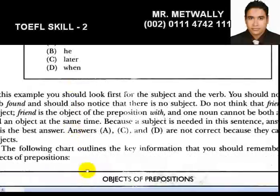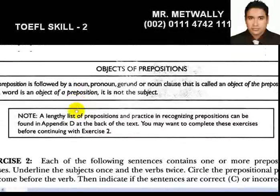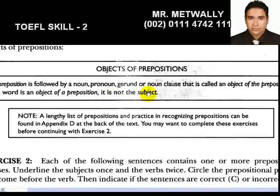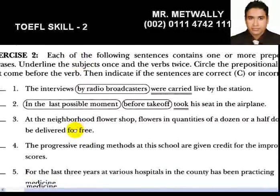Now for an important note: an object of a preposition is a noun, pronoun, gerund, or noun clause that follows a preposition. The most important thing to remember is that if a word is an object of a preposition, it is NOT the subject. Take care of this — if it's the object of a preposition, it cannot be the subject.